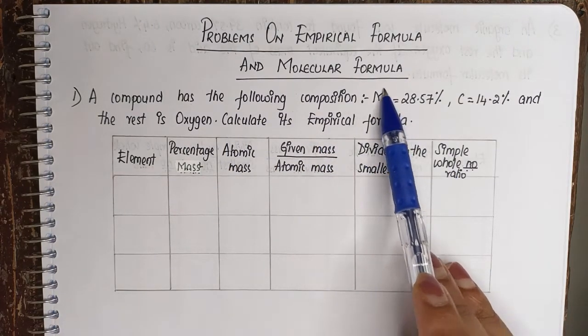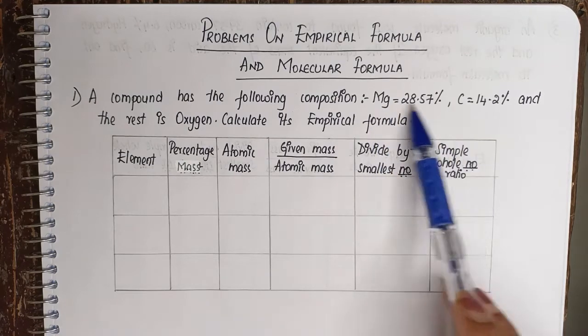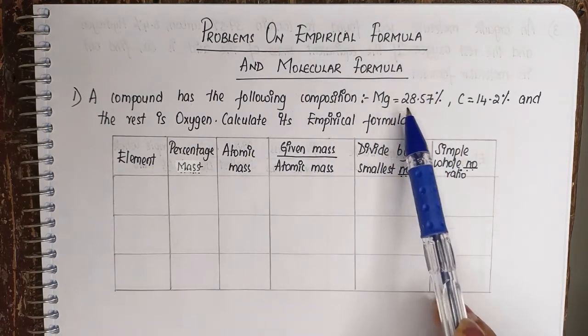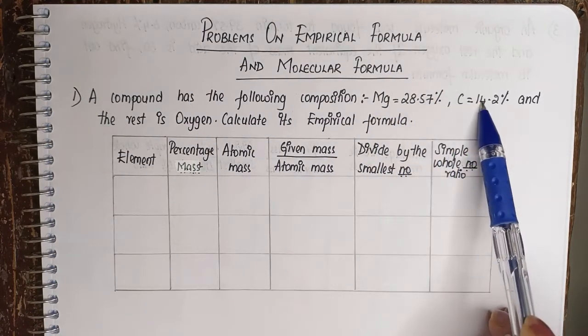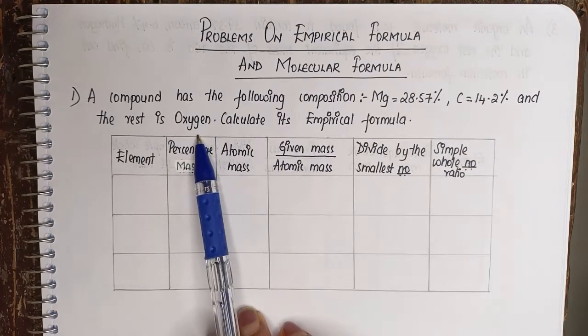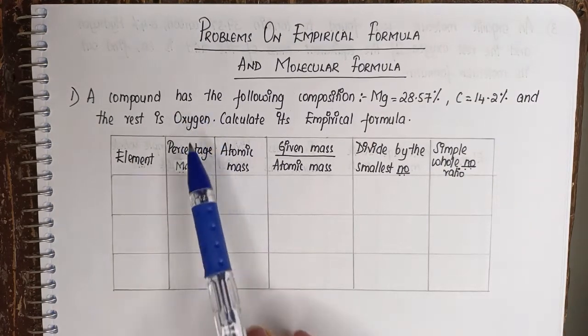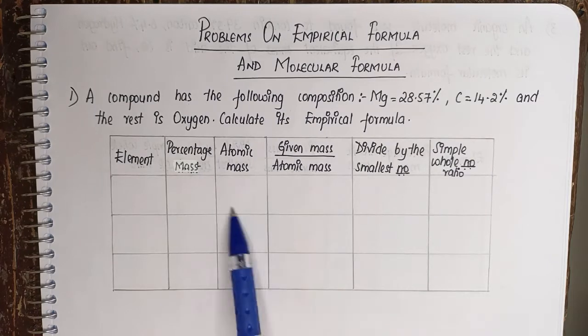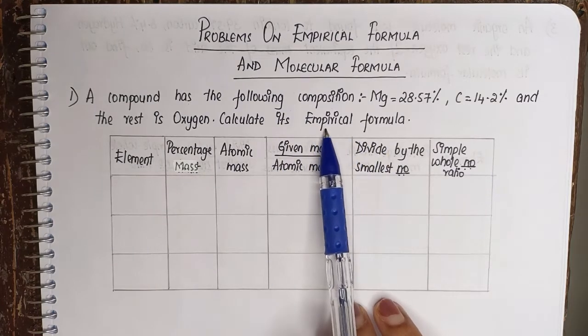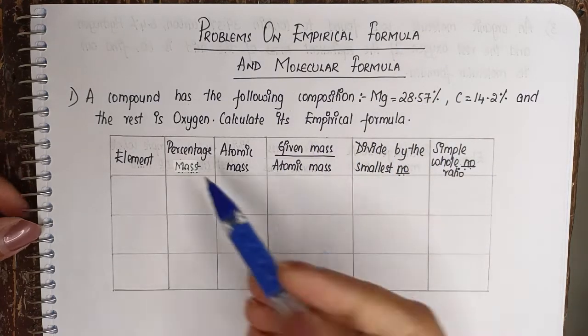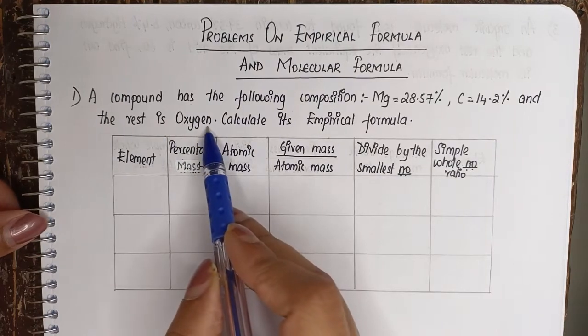So we are given three elements: magnesium, carbon, and oxygen. Out of these, magnesium and carbon percentages are known to us. Oxygen is not known. We need to find that first, then we'll use the table to calculate its empirical formula.